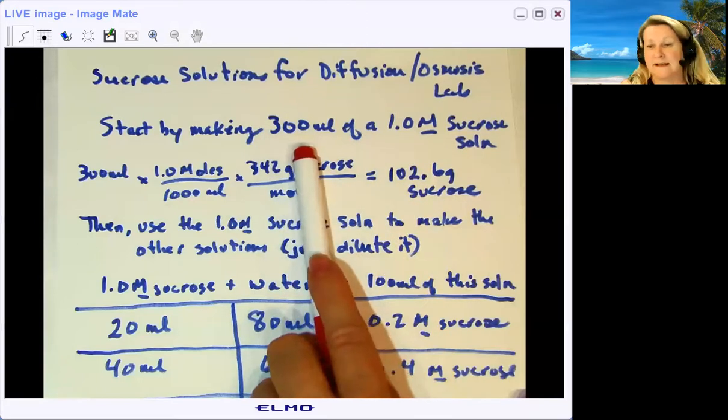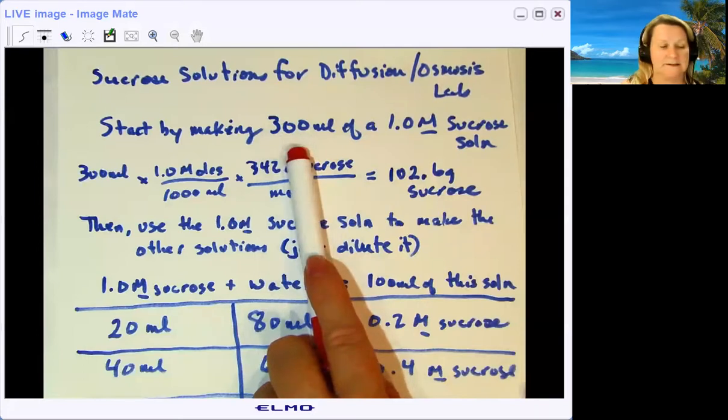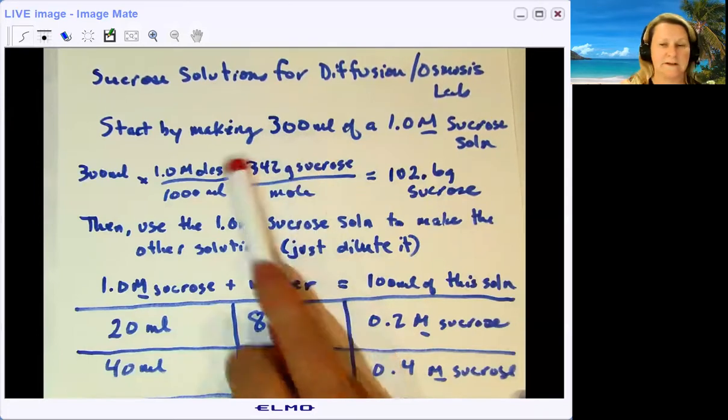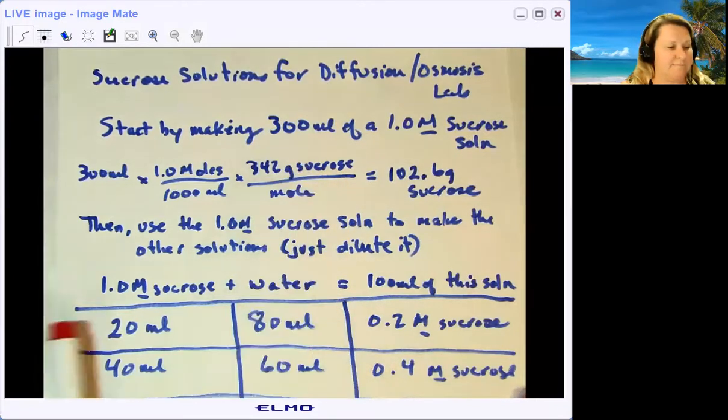If you were doing this with a class of 30 students, I would multiply that by 10, so I would make three liters. Everything on this chart I would multiply by 10. I'd make three liters, okay, but let's go with what we have - 300 mils.